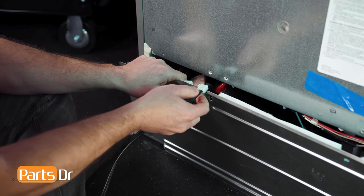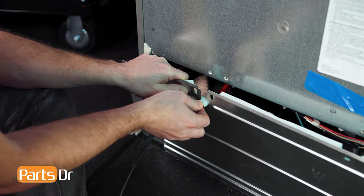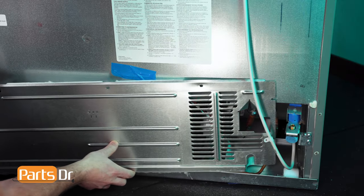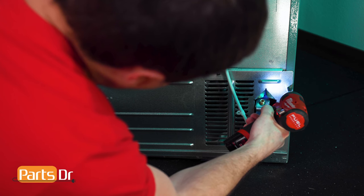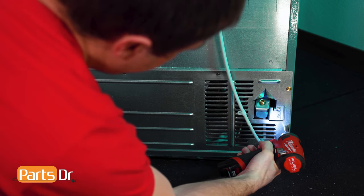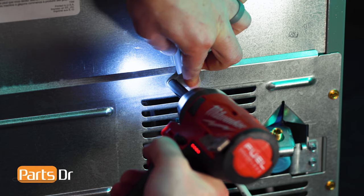To install the back cover, first insert the power cord into the retainer slot. Then route the water line through the back cover. Align the cover and reinstall the screws. Make sure to install the screw through the water line retainer.